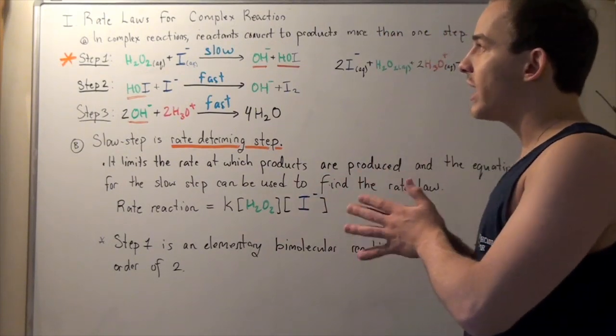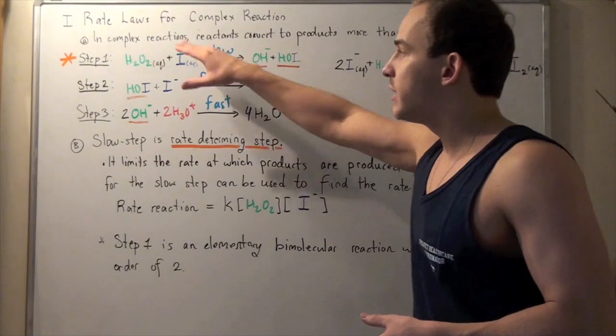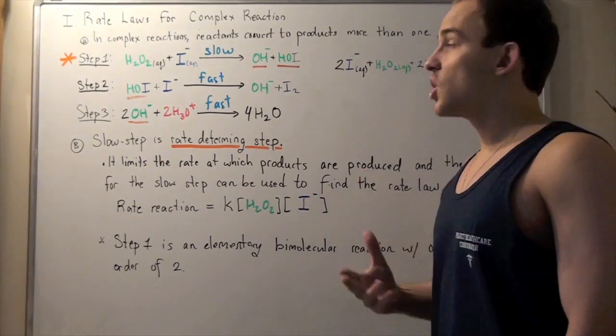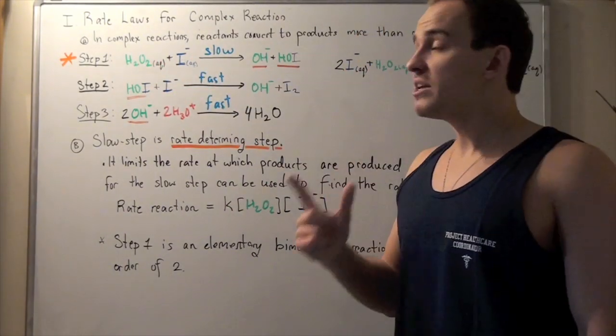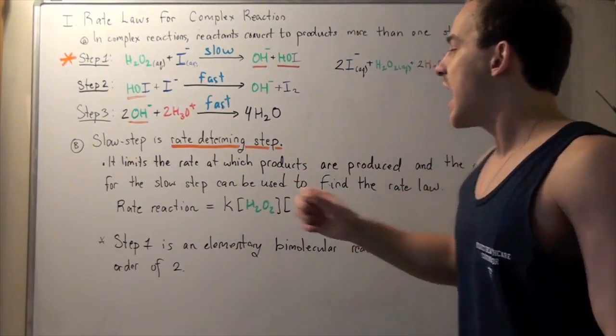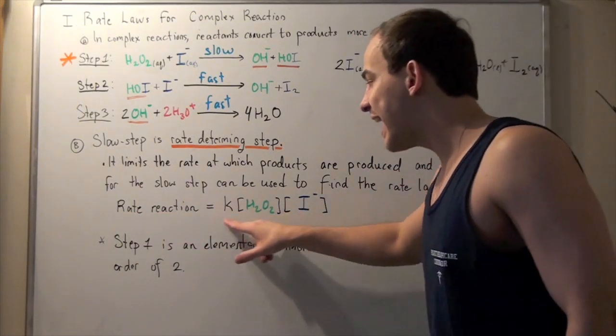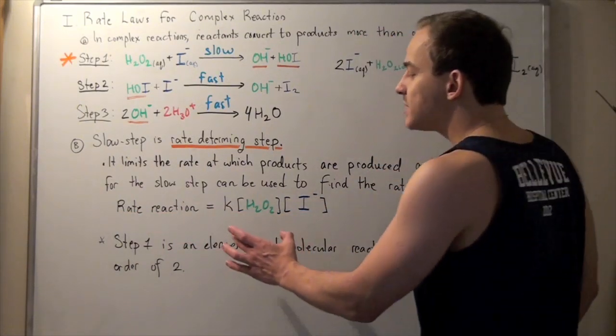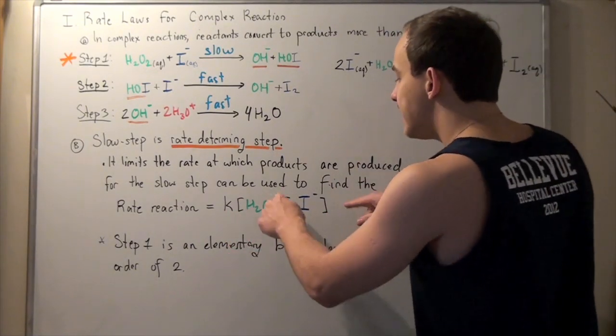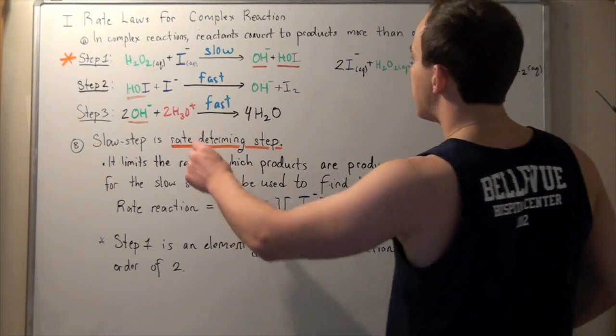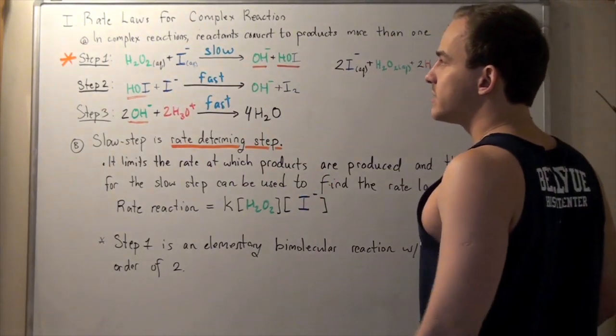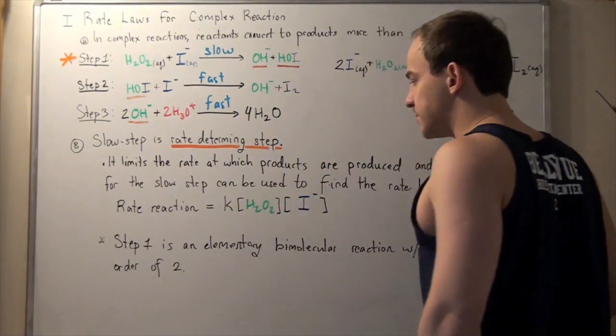So, this is a second way that you can find rate laws in complex reactions, by using the rate law for the slow step, the rate-determining step. So, since this is a bimolecular elementary reaction, we can use the coefficients as the exponents. In other words, our rate of reaction is equal to K, our rate constant, times the concentration of hydrogen peroxide, times the concentration of iodide. And each of the exponents is one because we have one mole of this guy, and one mole of this guy react to produce these two intermediates. And this is indeed a balanced equation.